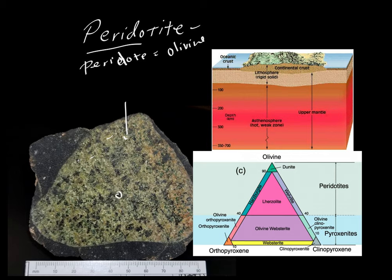There's some darker material here, and that darker material is probably pyroxene. So peridotites are a mix of olivine plus pyroxene, but they have quite a bit of olivine, and so that's why they get the term peridotite from this root peridote.